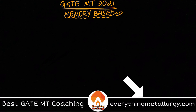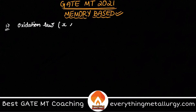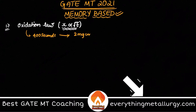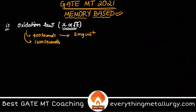The first question is an easy question based on oxidation law. It's like a gift question — they directly gave in the problem that the weight gain is proportional to √t. This proportionality is given in the question itself. So the scenario is: when oxidizing something in some atmosphere, in 400 seconds you got 2 mg per cm² weight gain.